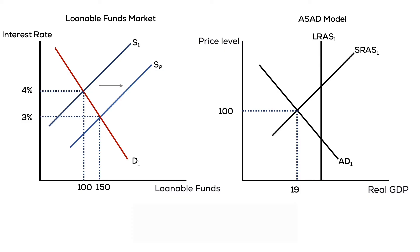Therefore, during recessions, the Federal Reserve purchases securities, increases money in circulation, and causes interest rates to fall. Therefore, consumption and investment will increase. The unemployment rate decreases, but the price level increases, and the economy will return to long-run equilibrium.